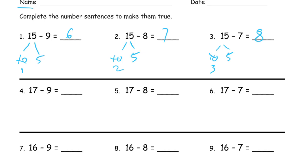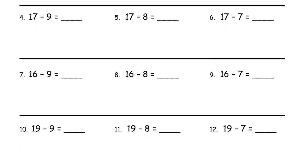And you may notice this — there's kind of a trick to this. See, our minuend, or the whole in our number sentence, is the same every time. And the number we're subtracting — the subtrahend — is minus 9 and we had 6. Minus 8, we're taking away one less, so we have one more left behind. So maybe we see sort of a pattern there to check it.